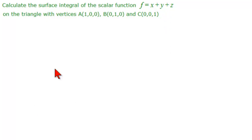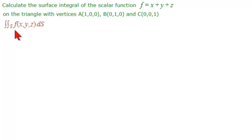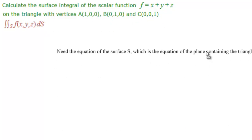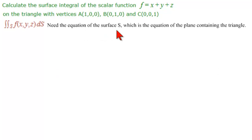So what does the problem say? Calculate the surface integral of the scalar function. We see an f, but we don't see an S. The nice thing about triangles is that three points also determine a plane. So the surface is going to be the plane containing the triangle. We need to find the equation of the surface S, which is the equation of the plane containing the triangle.